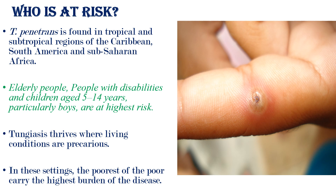Elderly people, people with disabilities, and children aged 5 to 14 years, particularly boys, are at high risk. Tungiasis thrives where living conditions are precarious. In this setting, the poorest of the poor carry the highest burden of the disease.